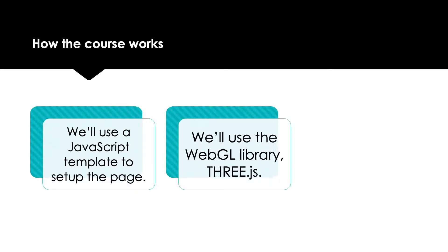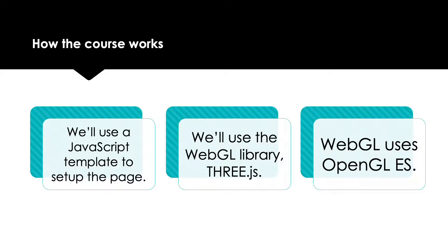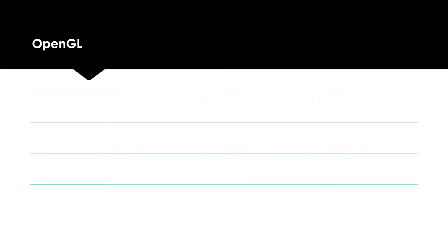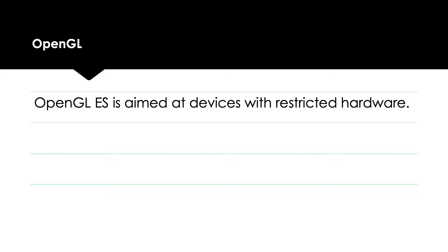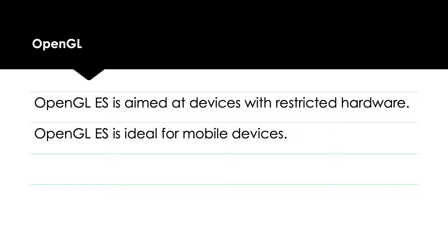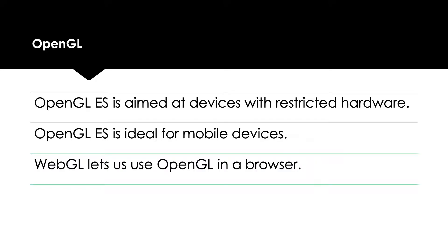We're also going to be using the popular open source library 3GS. This is a library that makes working with WebGL much easier. WebGL uses OpenGL ES under the hood. OpenGL is a fast library for working with 2D and 3D graphics. OpenGL ES is a version of OpenGL aimed at devices that might have more restricted hardware. So the code you learn to write will work great on mobile devices. WebGL allows us to use OpenGL in a browser.